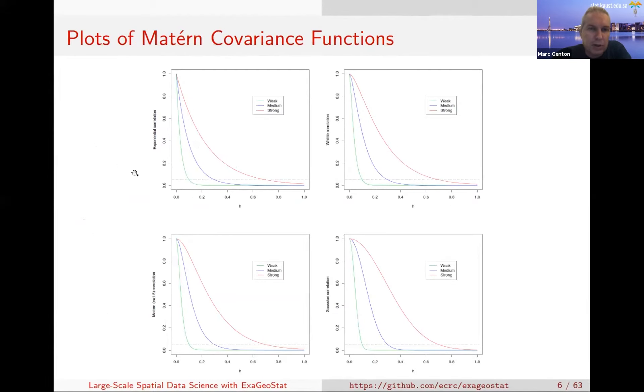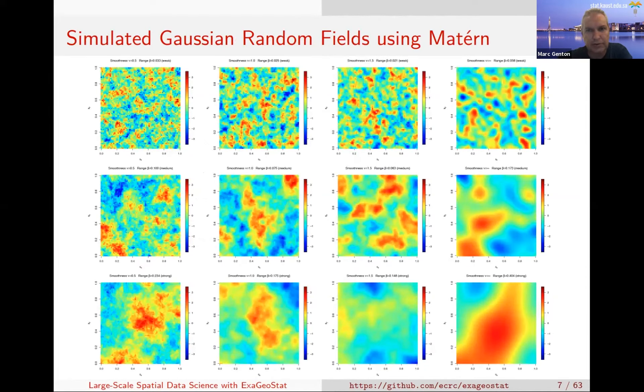Here I have plotted some Matern covariance functions for different values of the parameter nu. Nu equals 0.5 is exponential, nu equals 1 is the Whittle, 1.5 is here, and when nu goes to infinity it's called Gaussian or square exponential correlation. Every time there are three curves: green for weak, blue for medium, and red for strong dependence. What is different is the behavior for small distances.